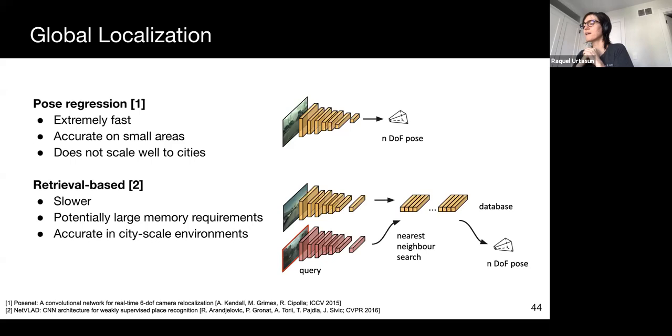Retrieval-based methods, on the other hand, are slightly slower and have potentially large memory requirements because they have to store the entire observation dataset, but tend to be much more accurate in large geographical scales.